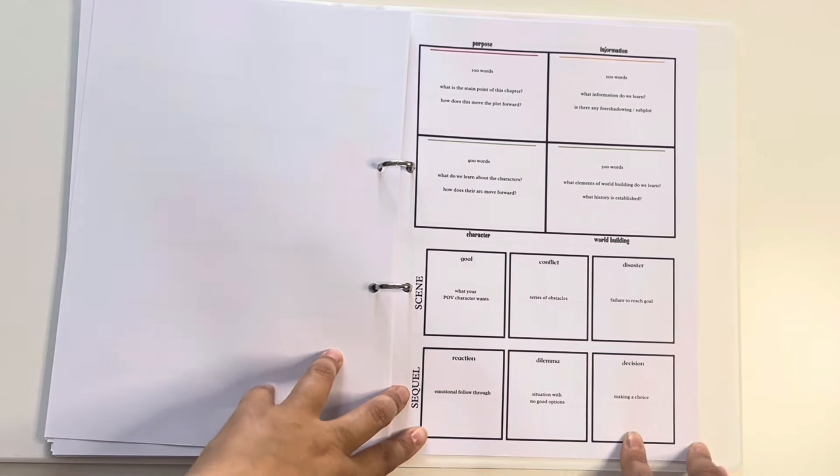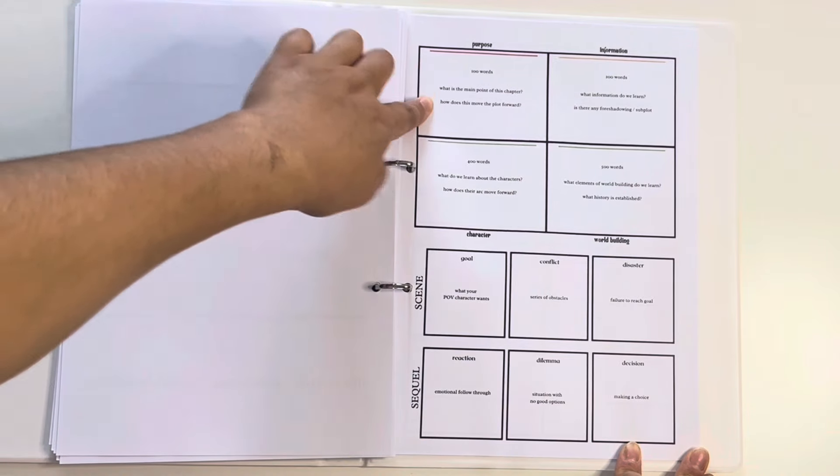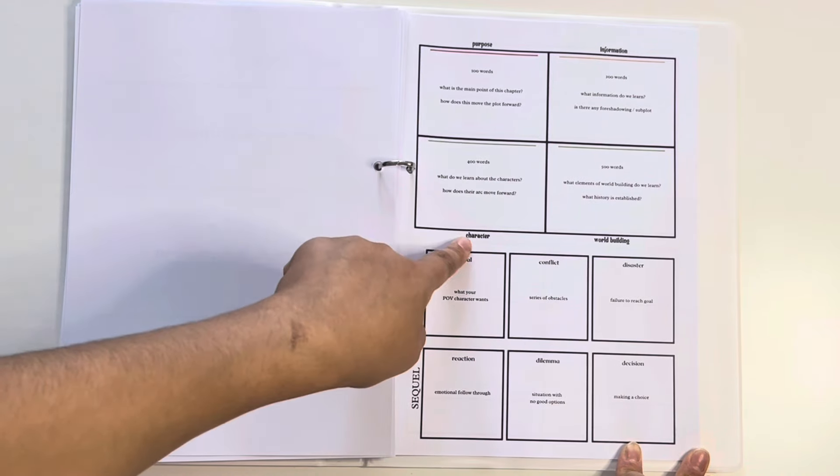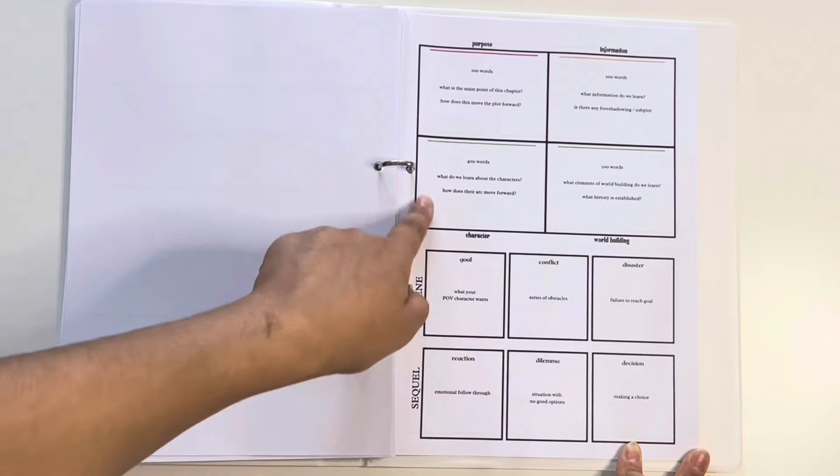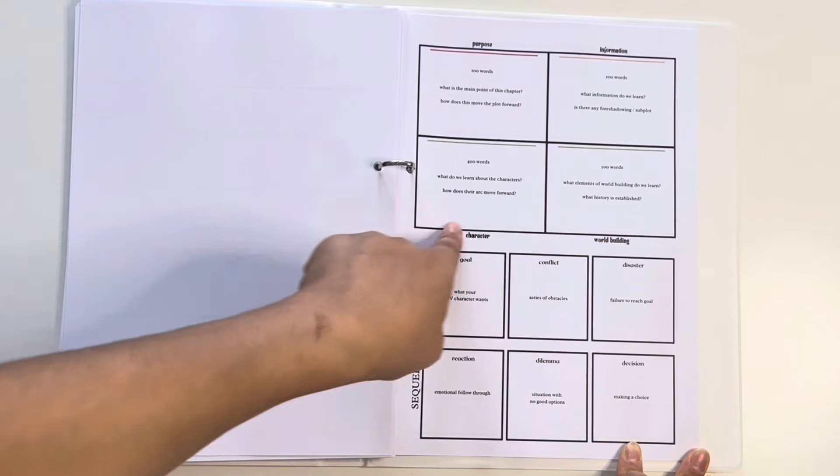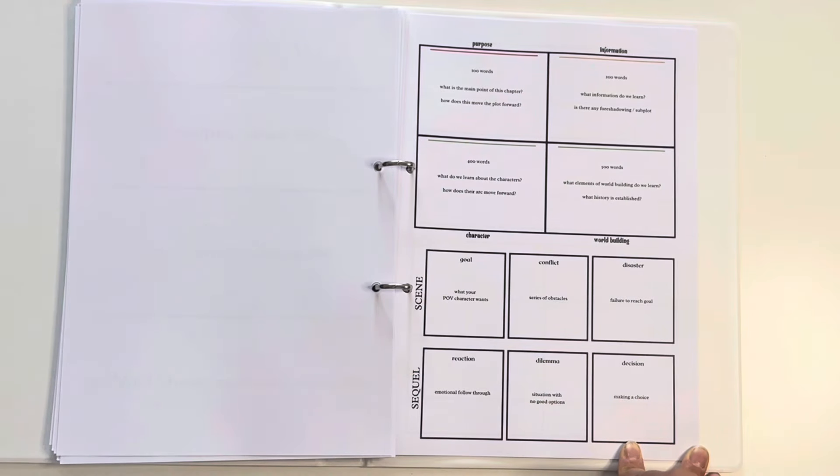And then we have this lovely little page as well. So the purpose, the information, the character, and the world building. And these are everything that I would need to include in the outline to keep myself on track.